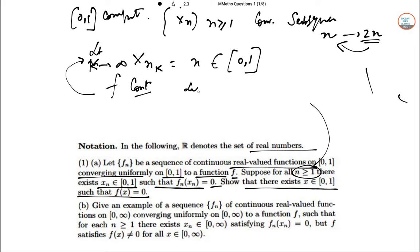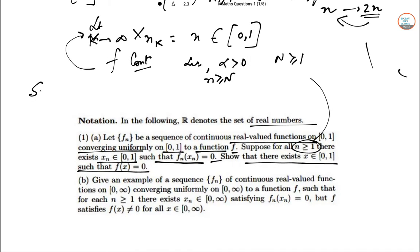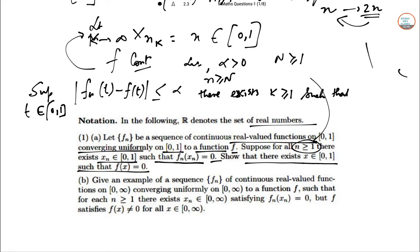Now, let alpha greater than 0. Now there exists N greater than 1 such that N is greater than equal to capital N. Now the supremum value of this structure is, where T belongs to [0,1], for all K greater than equal to capital K of NK is greater than equal to capital N.